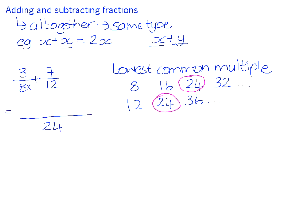We needed to multiply 8 by 3 to give us 24, so we do the same to the numerator: 3 times 3 is 9. We need to multiply 12 times 2 to get 24, so we multiply 7 times 2. That gives us 14. 9 add 14 is 23 over 24.